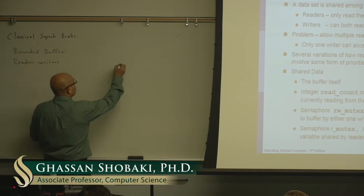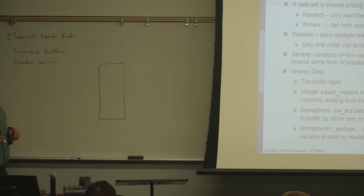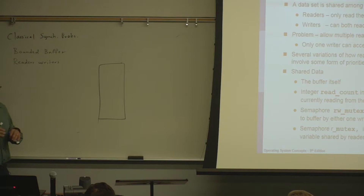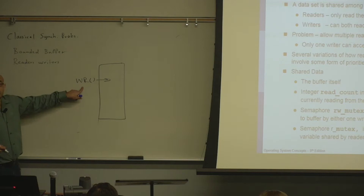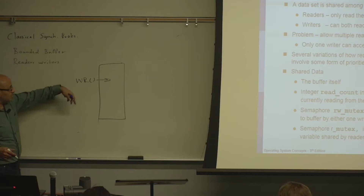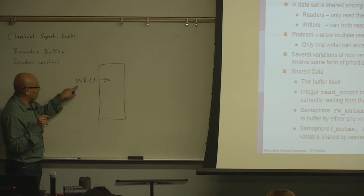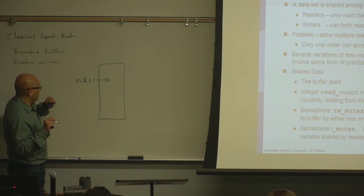The readers-writers problem: we have a shared buffer that is accessed by multiple processes, reading and writing. The issue is not the size of the buffer; the issue is controlling access to the buffer among readers and writers. If you have a writer writing to the buffer, you don't want any other writers writing at the same time, because that would cause conflicts. Only one writer should have exclusive access to the buffer.